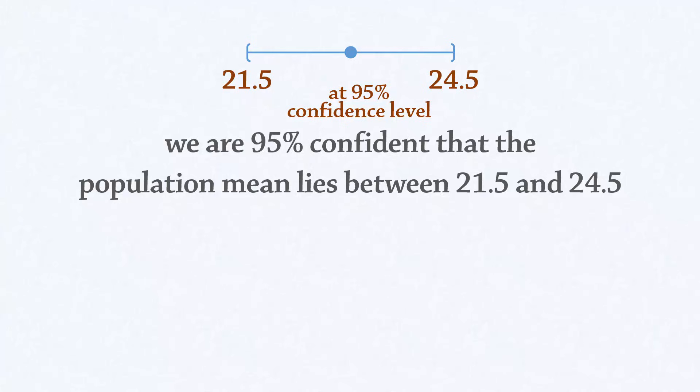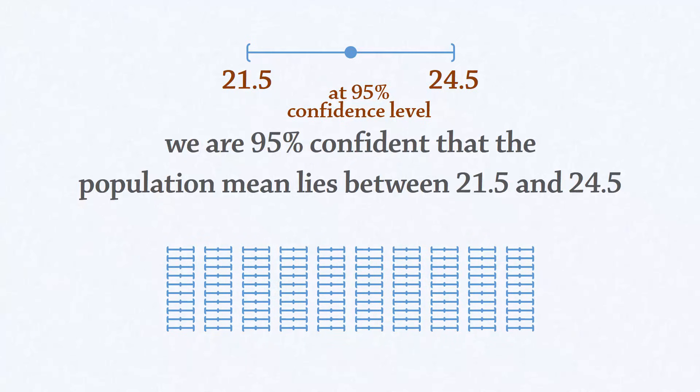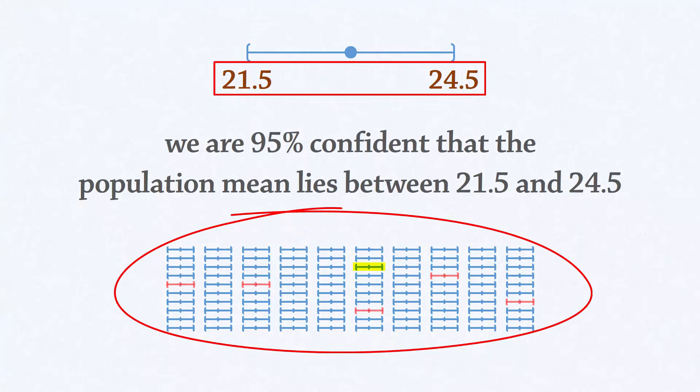Note that it would be incorrect to say that there is a 95% chance that the population mean lies between 21.5 and 24.5. What the 95% confidence interval means is that if we select 100 samples of the same size, 95 of the confidence intervals obtained from them will contain the population mean. This interval from 21.5 to 24.5 here is just one of those 100 intervals.